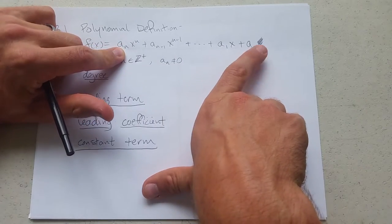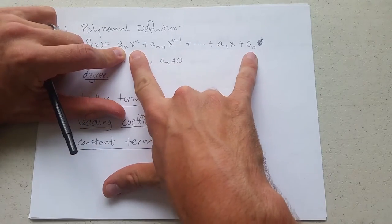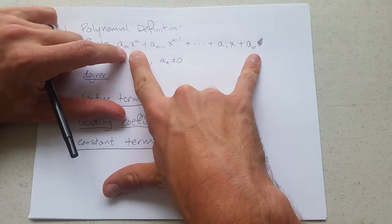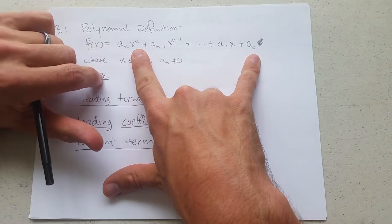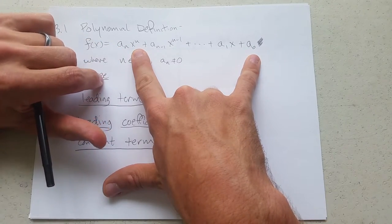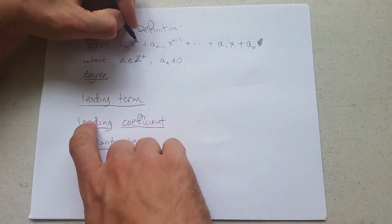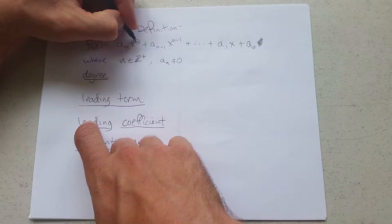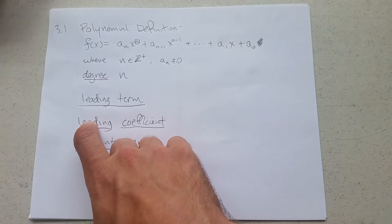This n, however... if you count carefully, you're counting from zero to n. There's really n plus one terms. The degree is not the number of terms. The degree is the power of the highest term. So this has degree n.